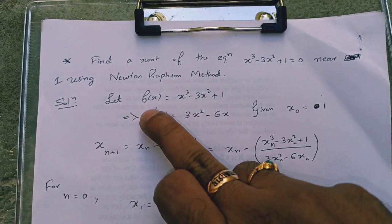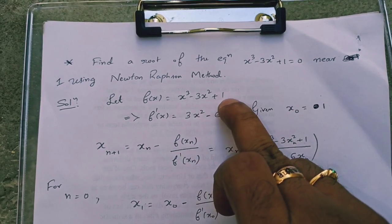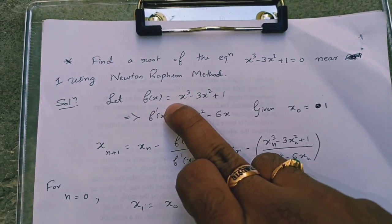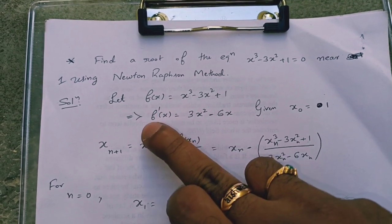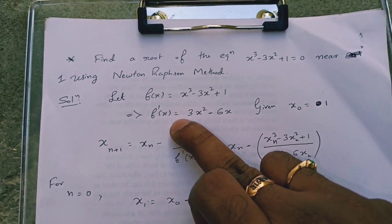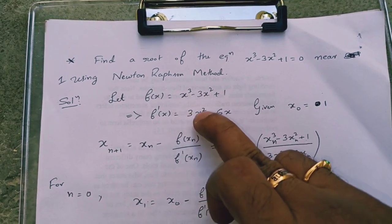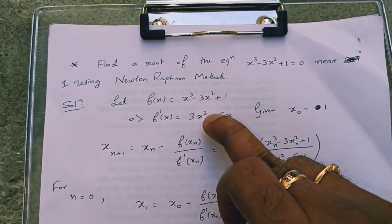First, we take x cube minus 3x square plus 1 as f of x and we find out the derivative of f of x which is f dash of x equal to 3x square minus 6x.